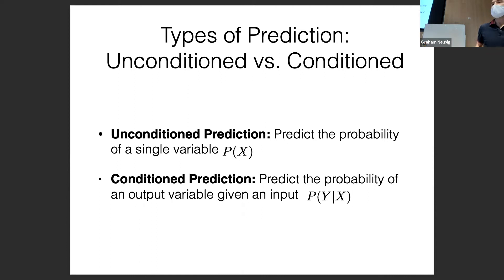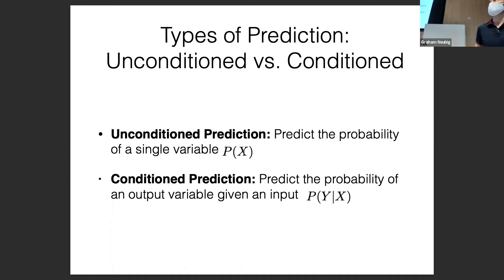Unconditioned prediction would be: generate text that is natural — generate text according to the distribution of all the data you've been trained on, more or less.